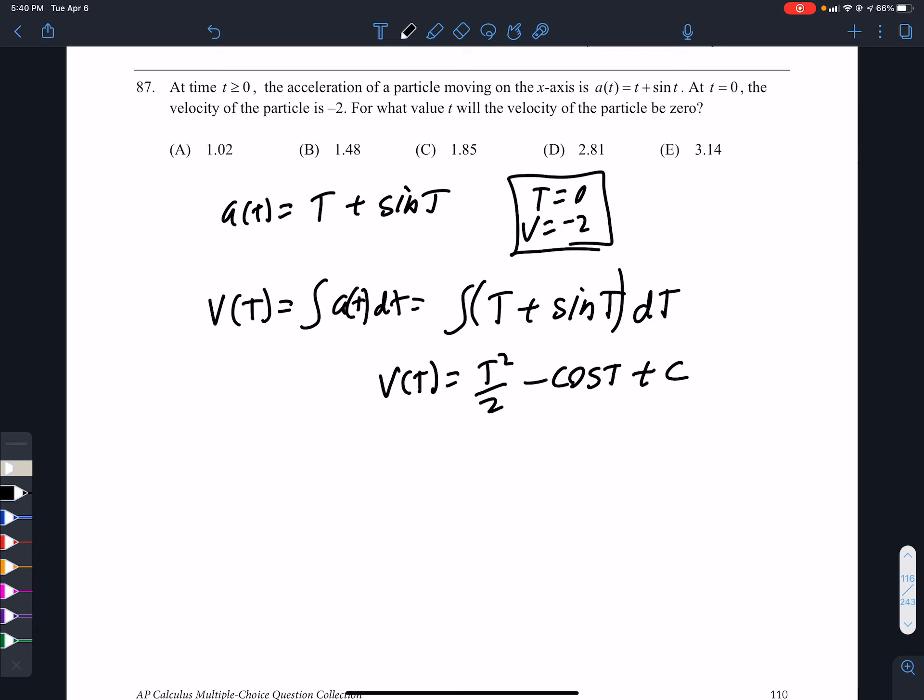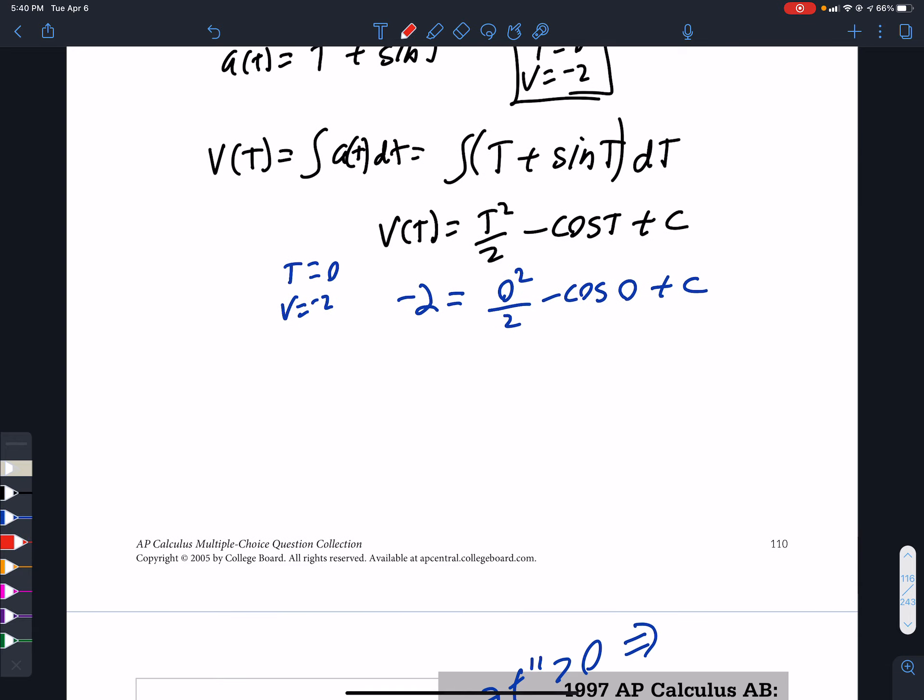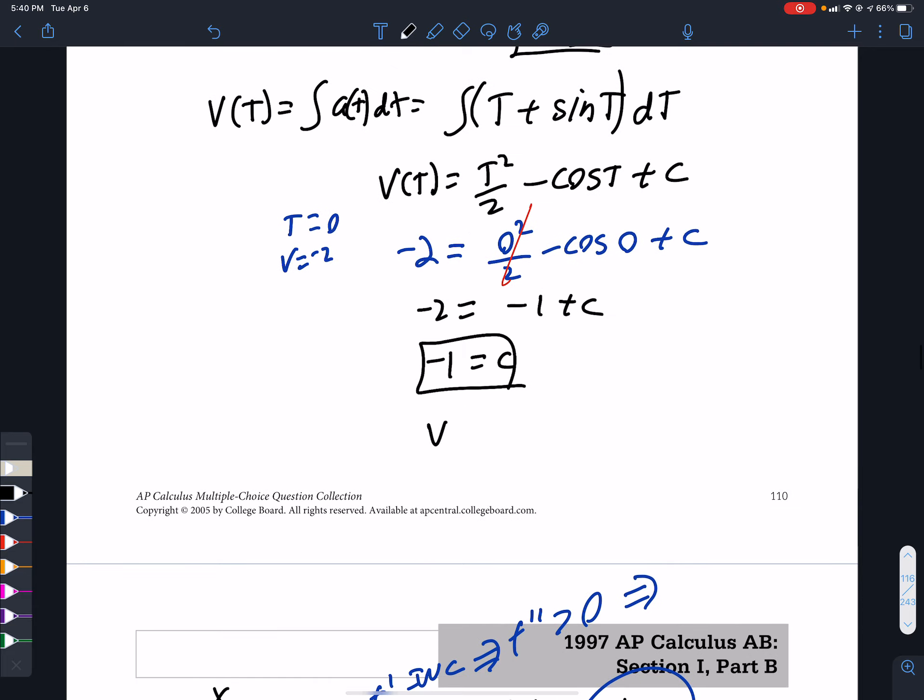We're going to take care of that because when t is 0, v is negative 2. So I'm going to put in negative 2 for v, 0 for t, and simplify this. That's 0, so I get negative 2 equals, and the cosine of 0 is 1. I'm going to add 1 to both sides, and so my c is negative 1. Thus, I do have my velocity.